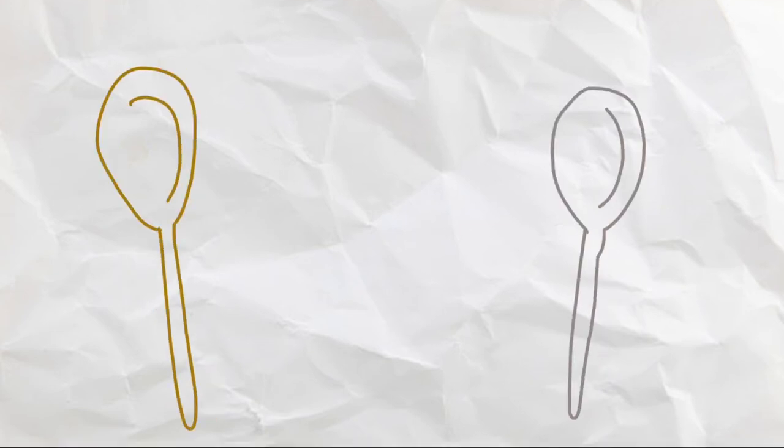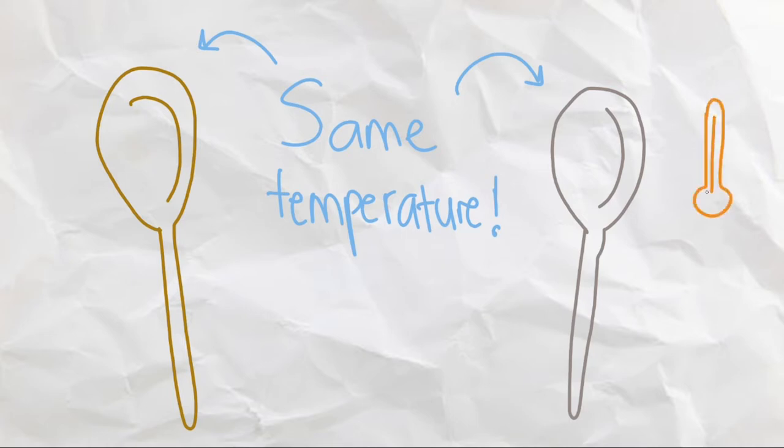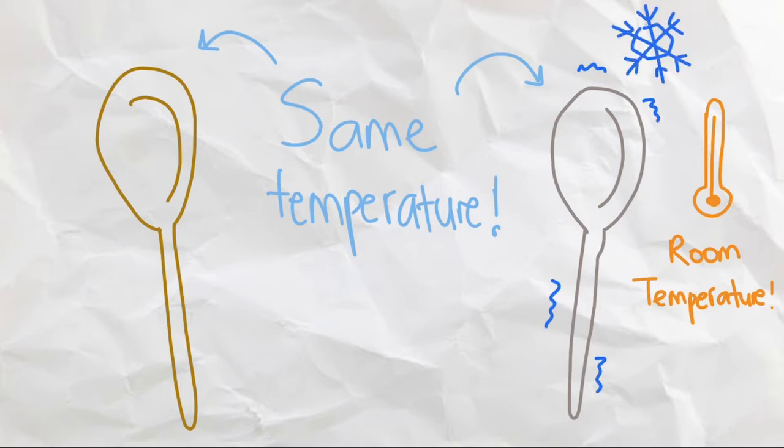The short answer? They were actually the same temperature. Assuming that both spoons are just sitting on a kitchen counter at room temperature, a metal spoon and a wooden spoon are both at the same room temperature, yet the metal one feels colder.